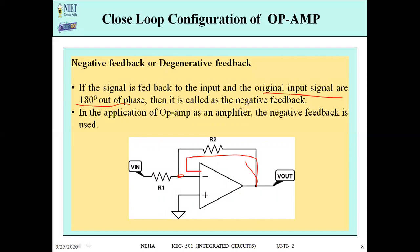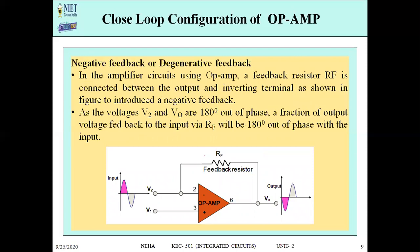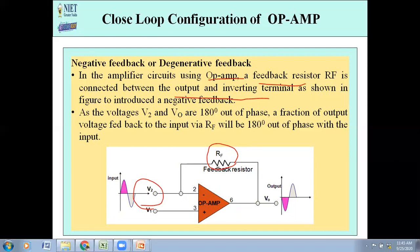We use negative feedback in amplifier applications. In an amplifier circuit using op-amp, a feedback resistor RF is connected between the output and the inverting terminal, as shown in the figure, to introduce negative feedback. When we provide this kind of circuit with negative feedback and an input at V2, the output will be inverted — 180 degrees out of phase.